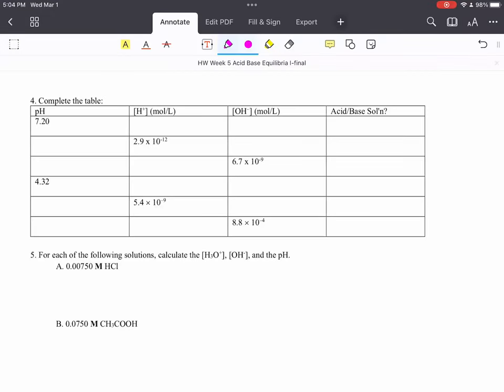This is going to be how to work on problem number four, complete the table, where sometimes you have pH, sometimes you have concentration of hydrogen, and sometimes you have concentration of hydroxide ion, and then determine whether it's an acid or a base solution.